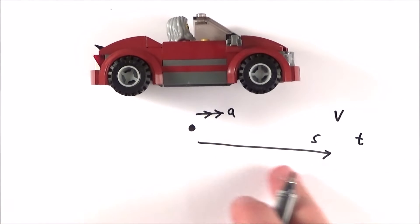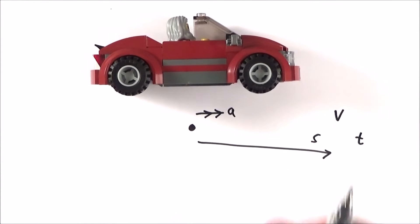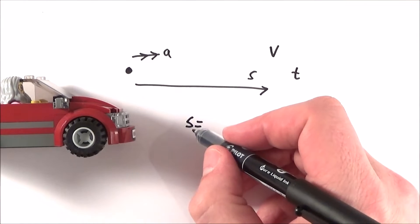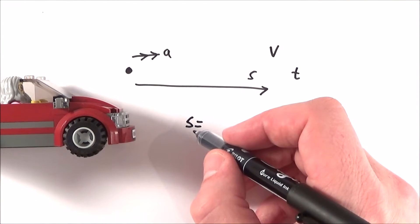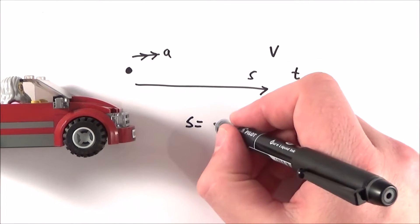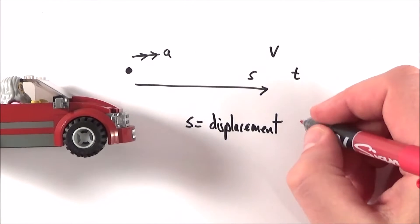These symbols are very important. Firstly, s is the symbol for displacement, which is a vector—a distance traveled in a certain direction—and we measure this in meters.